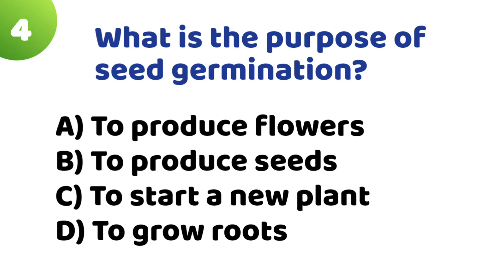Question 4: What is the purpose of seed germination? Option A: To produce flowers. Option B: To produce seeds. Option C: To start a new plant. Option D: To grow roots. The correct answer is Option C — To start a new plant.